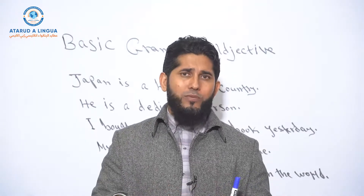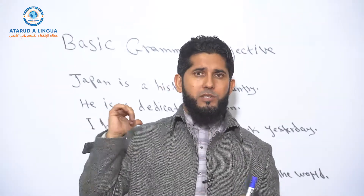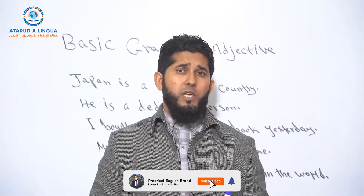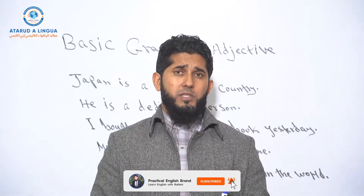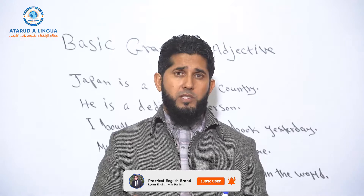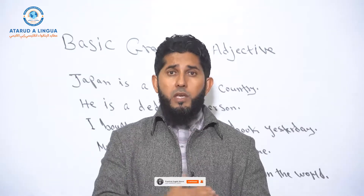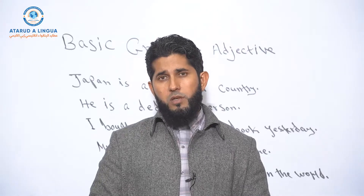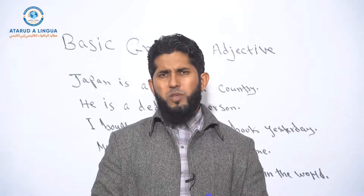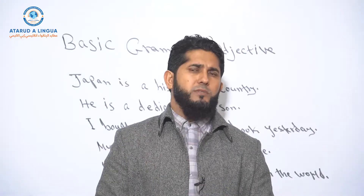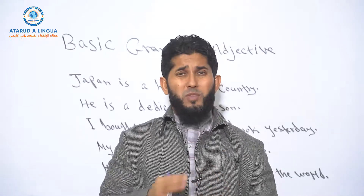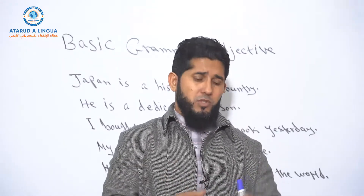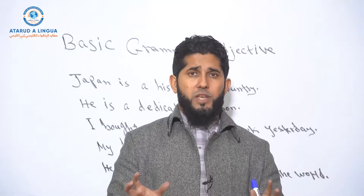Adjectives have three forms. We have simple adjectives, past participle adjectives, and present participle adjectives. In terms of degrees, we have a positive degree, a comparative degree, and a superlative degree. I'm not explaining these degrees in detail, but I'm just telling you that these are the forms of adjectives.